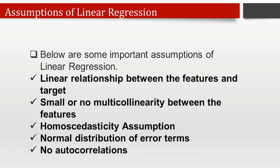Third, homoscedasticity assumption: this is a situation where the error term is the same for all values of independent variables, and there should be no clear pattern in the distribution of data in the scatter plot. Fourth, normal distribution of error terms: linear regression assumes that error terms should follow a normal distribution. If error terms are not normally distributed, the confidence interval will become either too wide or too narrow, causing difficulties in finding coefficients. This can be checked using the QQ plot — if the plot shows a straight line without deviation, the error is normally distributed.